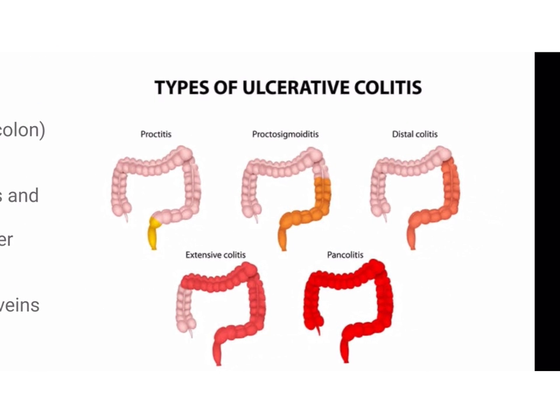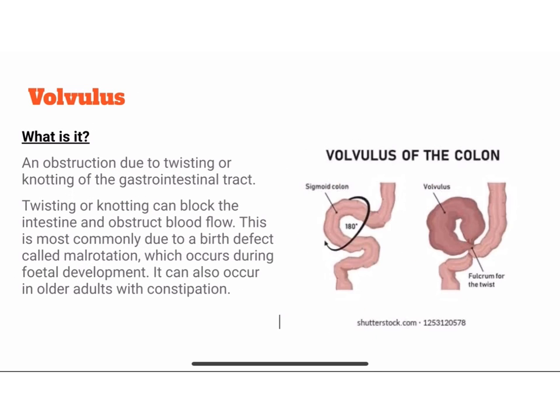There are various types of ulcerative colitis: proctitis, proctosigmoiditis, distal colitis, extensive colitis, and pancolitis. The type usually depends on the location where it is affected.